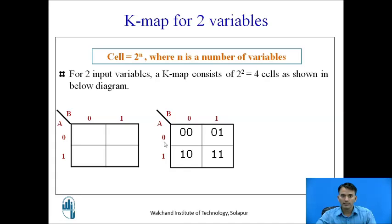In the K-map structure, the cells represent the combinations 0,0 then 0,1 then 1,0 and 1,1, corresponding to cell numbers 0, 1, 2, and 3.